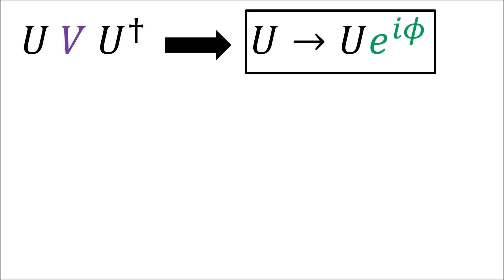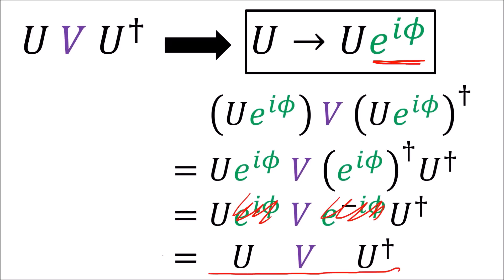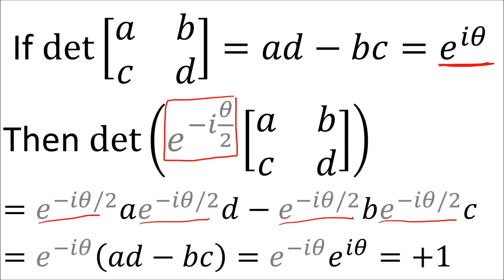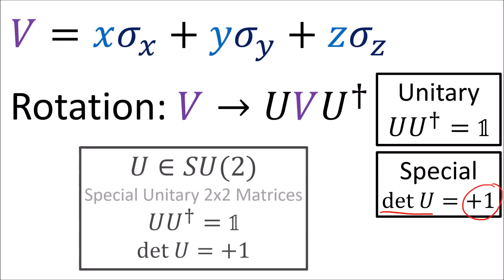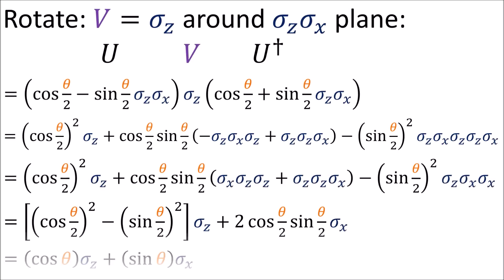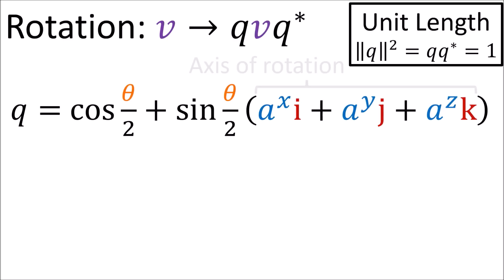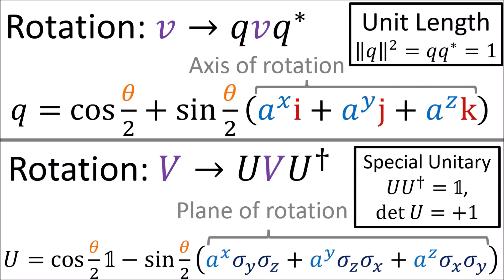Another thing to note is that multiplying U by an overall phase factor e to the i phi will not change the rotation result, since complex phase factors will cancel out. As shown in the last video, this allows us to set the determinant of U to any complex number of magnitude 1 that we like. So we set the determinant of U to be plus 1 by convention, making it a special unitary matrix SU2. Here's an example of rotating the vector sigma z in the zx plane. The math works out in a similar way to the example we saw earlier with quaternions.